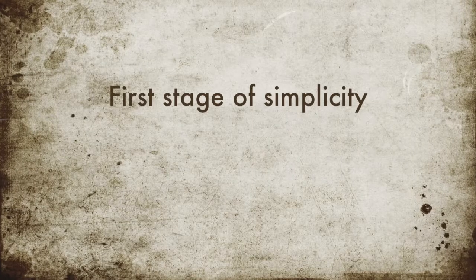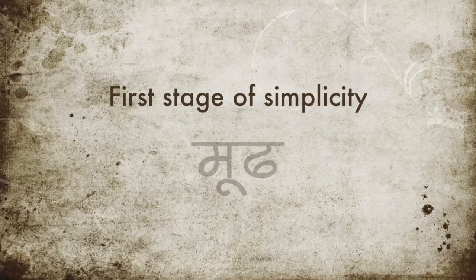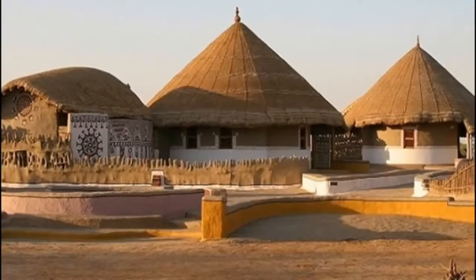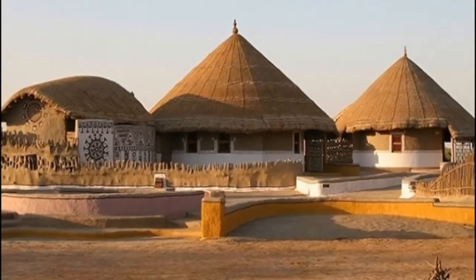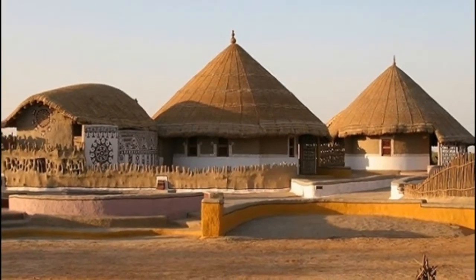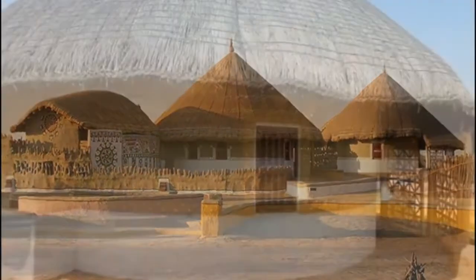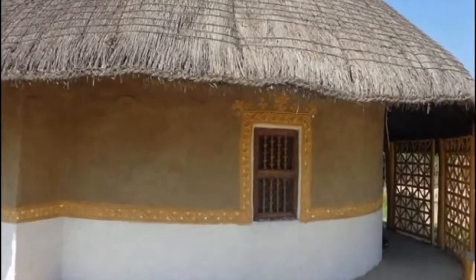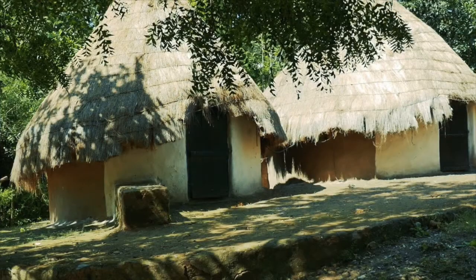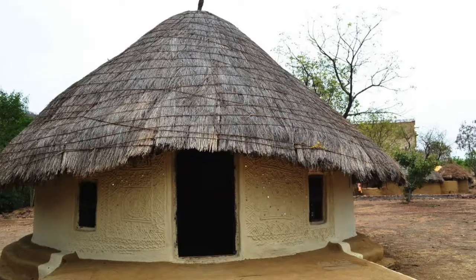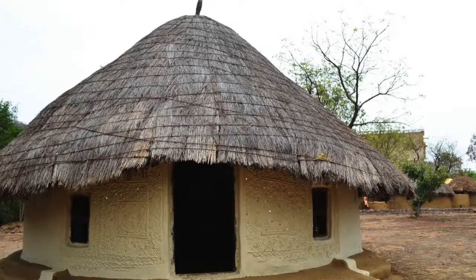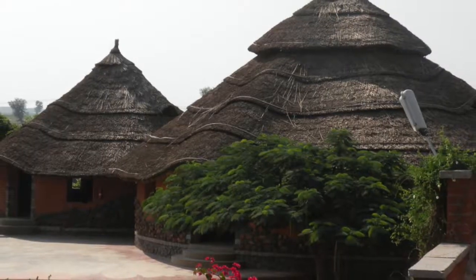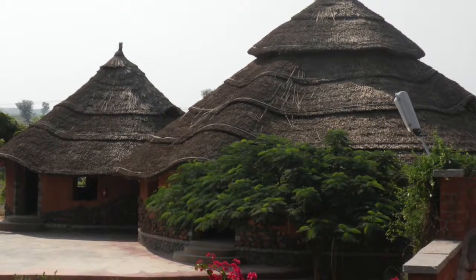The first stage of simplicity is mudaha — ignorant simplicity. In architecture, folk architecture could be termed as mudaha, or ignorant simplicity, because they are unacquainted with technology and resources. It is simple, but simpleness with no complexity.